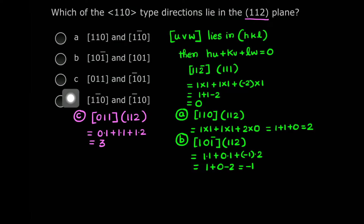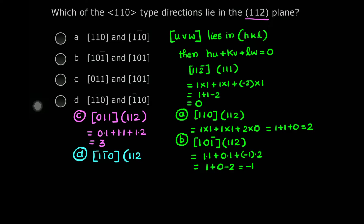Let's check the fourth option, which will be our correct answer. The direction is [1 1̄ 0] and the plane is (1 1 2). Taking the dot product: 1×1 + (−1)×1 + 0×2 = 1 − 1 + 0 = 0. So this direction lies in that plane.